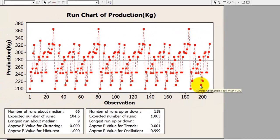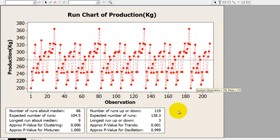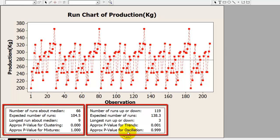Here you go, the run chart is displayed. I'm sure you already know that in the case of a run chart, you will get four p-values: approximate p-value for cluster, approximate p-value for mixture, approximate p-value for trends, and approximate p-value for oscillation.